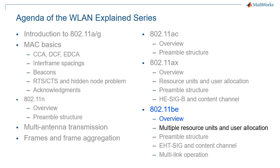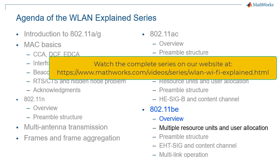This concludes this episode of our series Wireless LAN Explained, introducing the 802.11be standard, which is also known as Wi-Fi 7 or EHT for extremely high throughput.